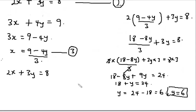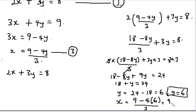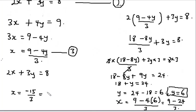Let's use equation 3. So x is equal to 9 minus 4 times 6, all divided by 3. This means x equals 9 minus 24 over 3, which is minus 15 over 3, so x is equal to minus 5.